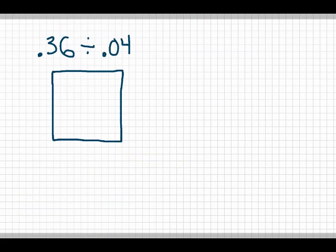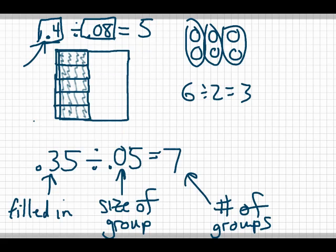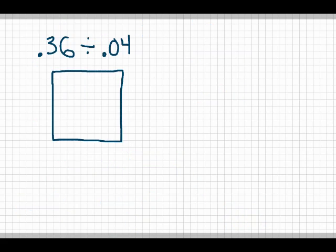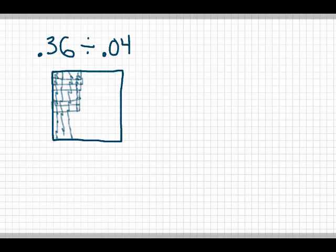Let's look at another one: 36 hundredths divided by 4 hundredths. First, fill in 36 hundredths of the box — I already have 30, and I only need 6 more. Now I need my group size to be 4 hundredths, so I start marking groups going across and then vertically. If you count those groups, there are actually nine groups, so 0.36 divided by 0.04 equals nine.